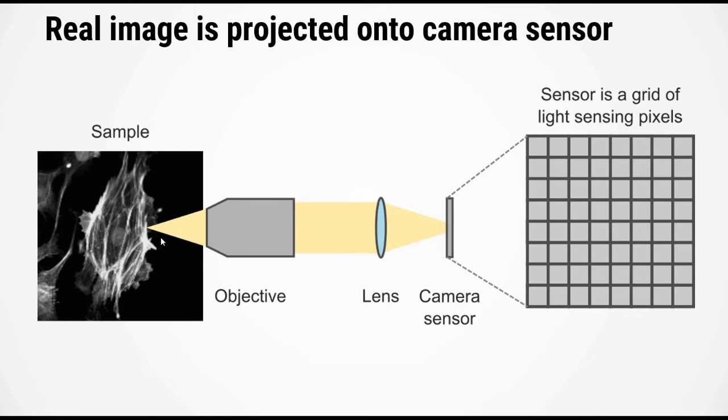Let's imagine that we have a sample on the left here. Light from the sample is collected by an objective lens. It is then focused using a series of other lenses onto a camera sensor. The camera sensor itself consists of a grid of light sensing pixels.